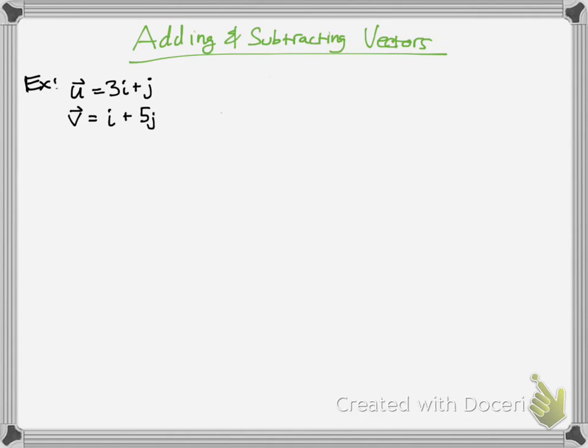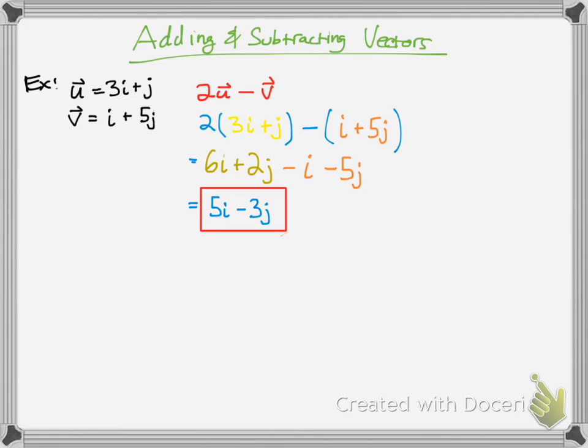So now if you want to subtract vectors, if I were to say subtract twice of u minus the v vector, well, you simply input those values. So u is in yellow and v is in orange. And since we're doing twice u, you have to distribute that. And you'd get 6i plus 2j minus i minus 5j. I distributed the negative as well. And then you get your combined vector when you subtract it.